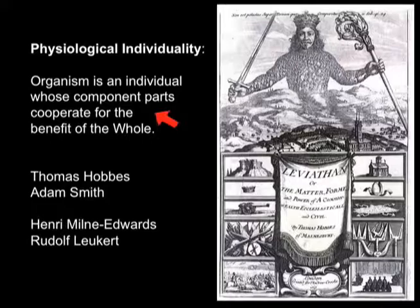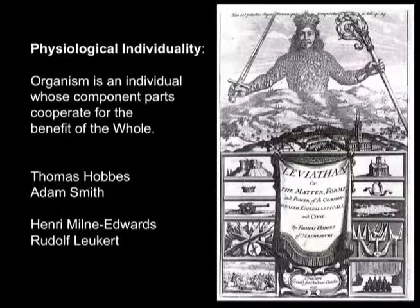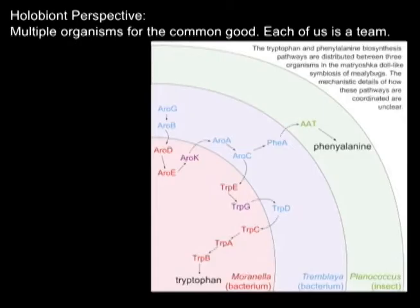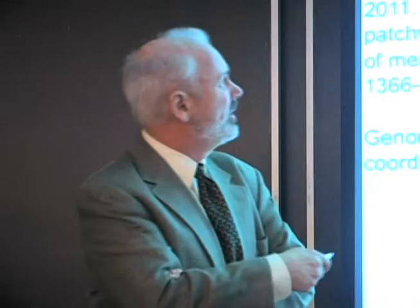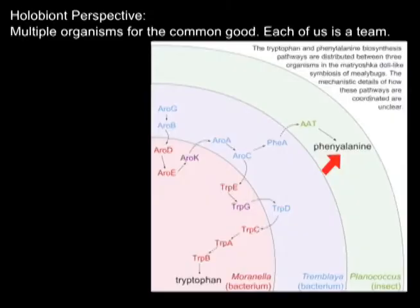What about physiological individuality, where the organism is an individual whose component parts cooperate for the benefit of the whole? This is the frontispiece of Hobbes' Leviathan — Thomas Hobbes, Adam Smith, and in biology, Rudolf Leuckart and Henri Milne-Edwards were big supporters of this notion of the physiological individual commonwealth. Just as cells coordinate together, so we find that the metabolites of symbionts and the host coordinate together.